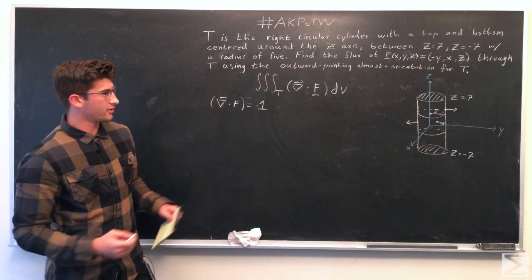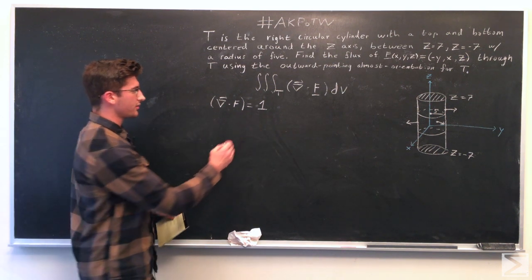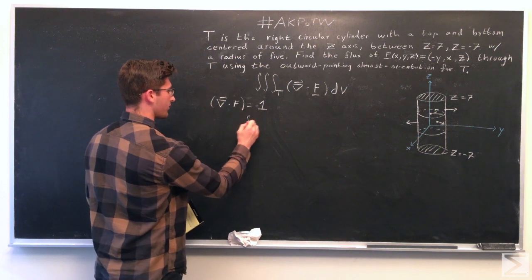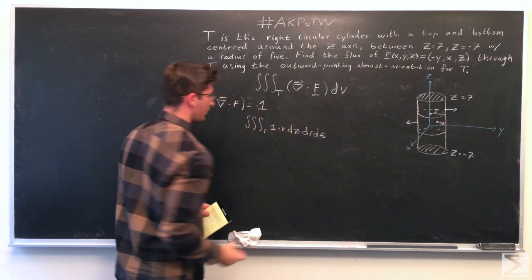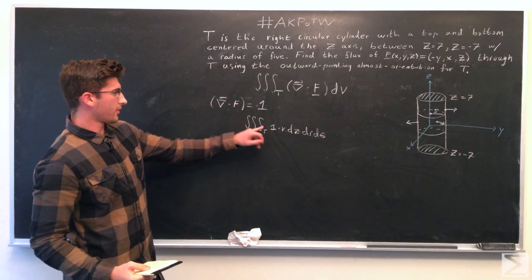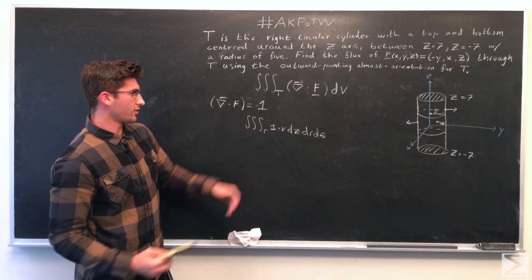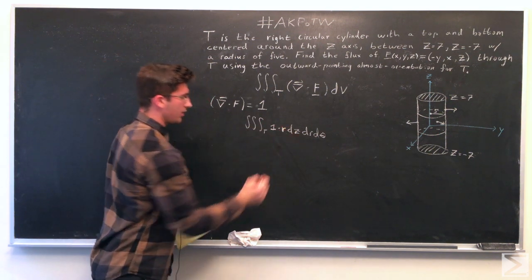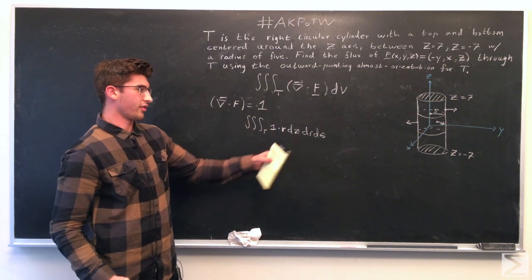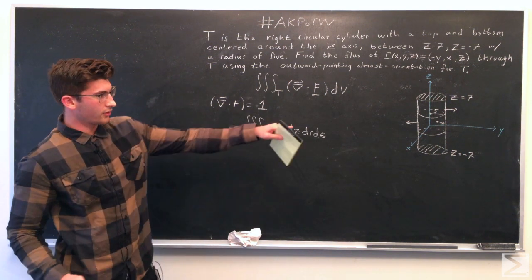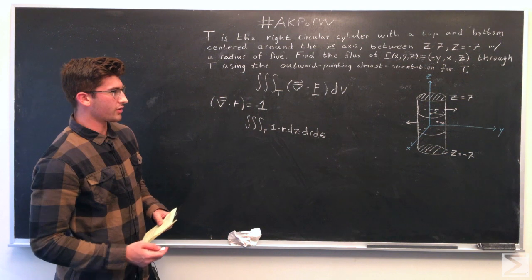So since we're working with a cylinder, we can go ahead and write this in cylindrical coordinates. So in cylindrical coordinates, the divergence 1 times r dz dr d theta. And if we look at the graph over here, we can find our region of integration.